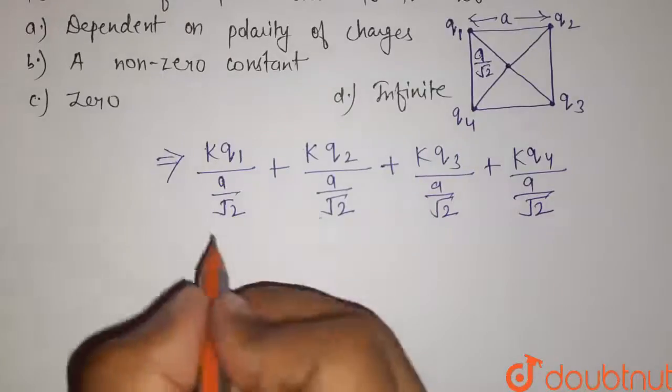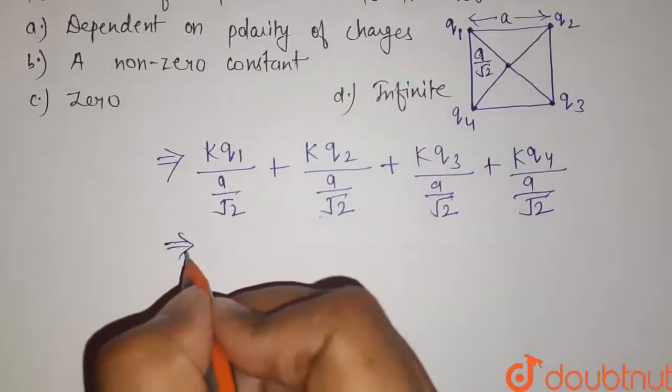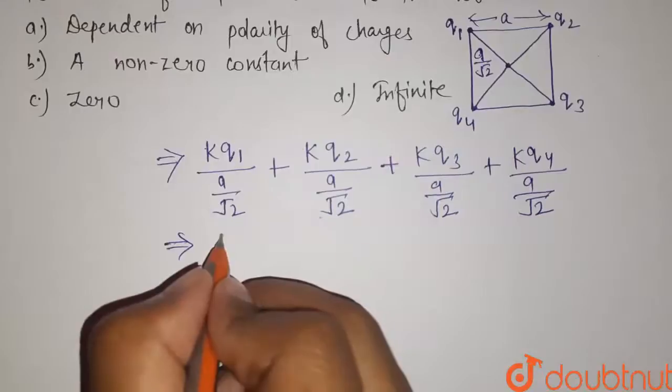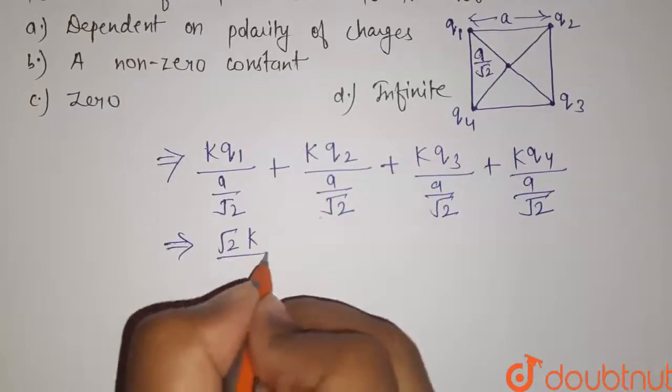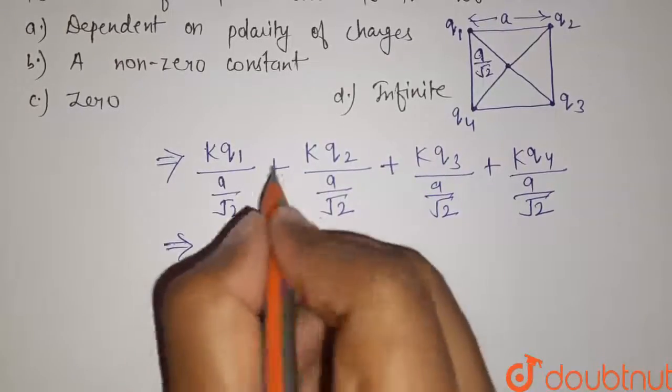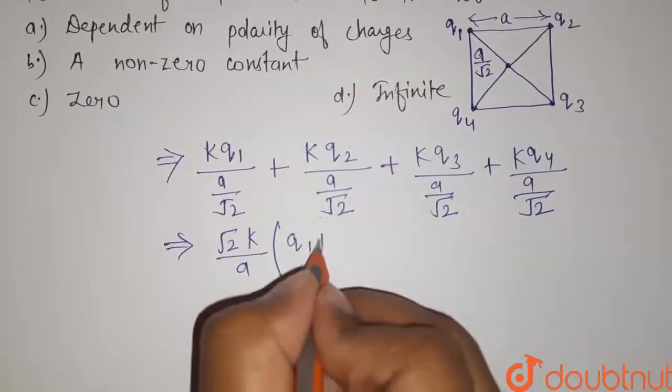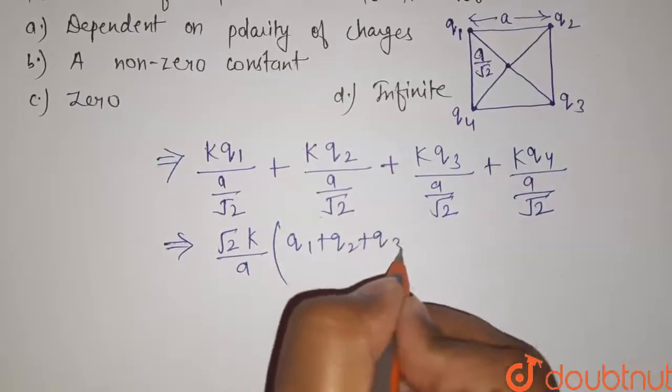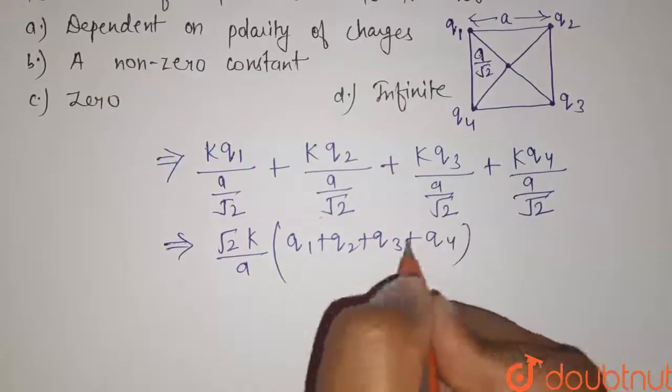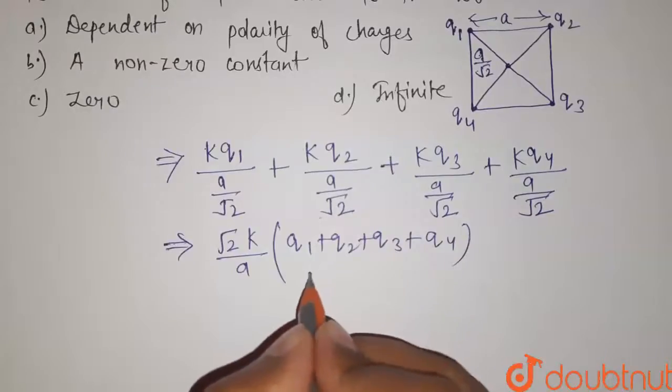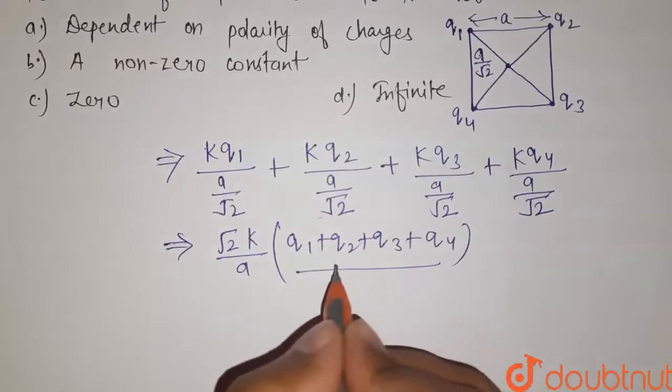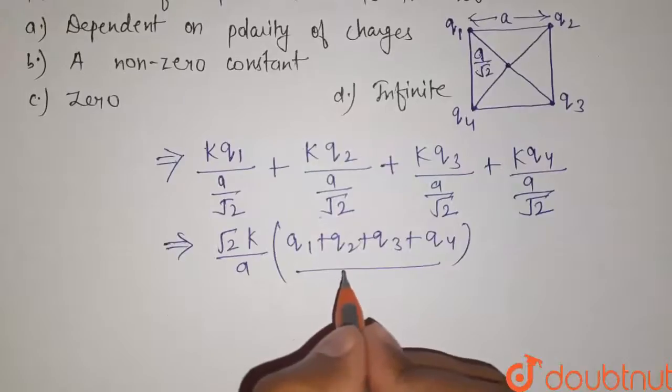Now let us simplify it. So it will be equals to root 2 k divided by a and here it will be q1 plus q2 plus q3 plus q4. And potential is a scalar quantity. Therefore, it doesn't have any direction.